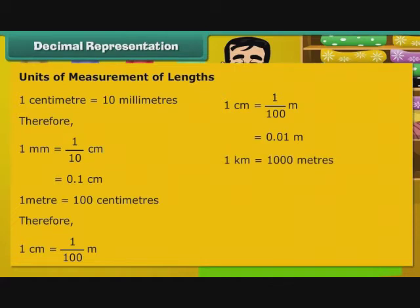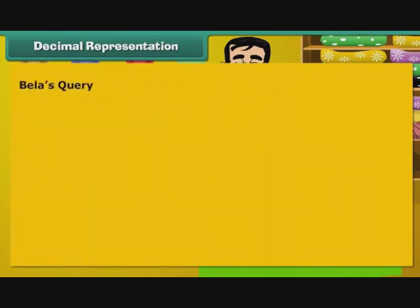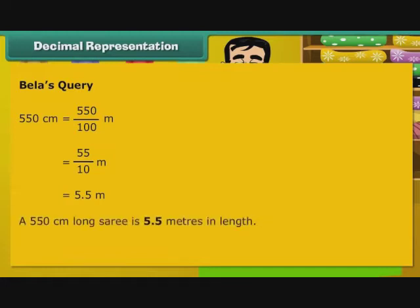1 km is equal to 1000 m. Therefore, 1 m is equal to 1 by 1000 km, that is equal to 0.001 km. Now, let us turn our attention to Bela's question. 550 cm is equal to 550 by 100 m, that is equal to 55 by 10 m, that is equal to 5.5 m. A 550 cm long saree is 5.5 m in length.